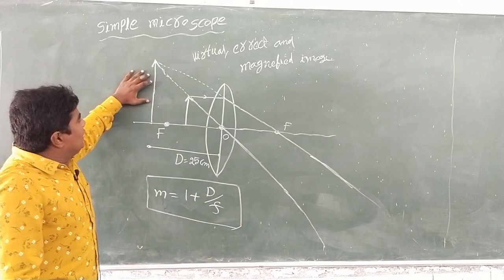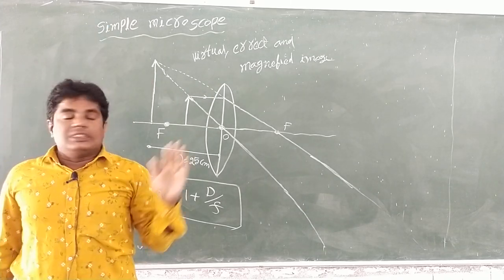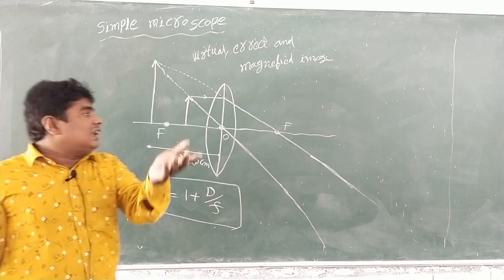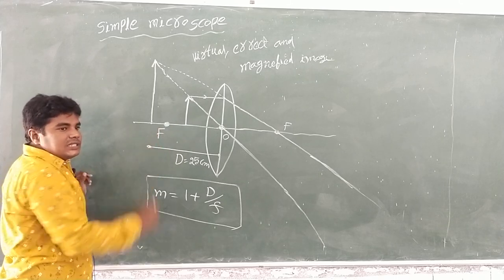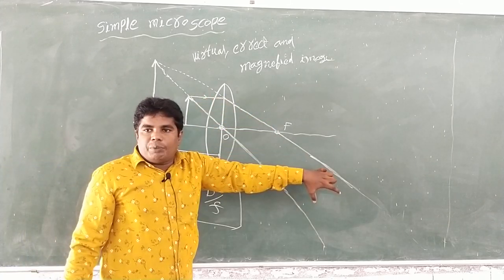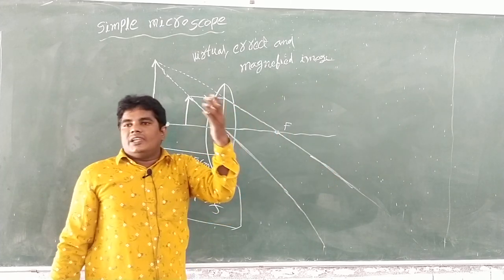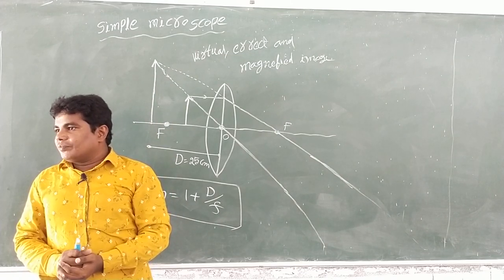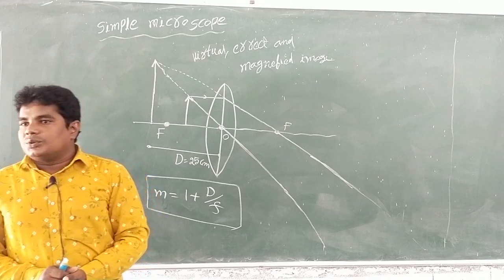This formula applies to the simple microscope. When the object is placed at the focus, parallel light rays emerge from the lens, and the image is formed at infinity. This completes the explanation of the simple microscope.